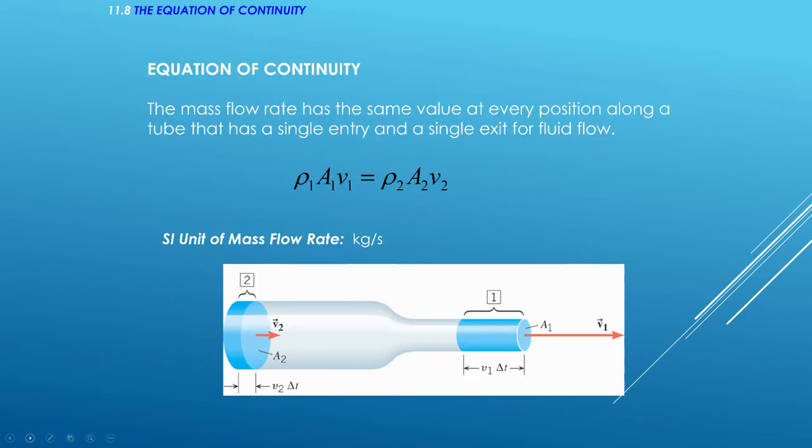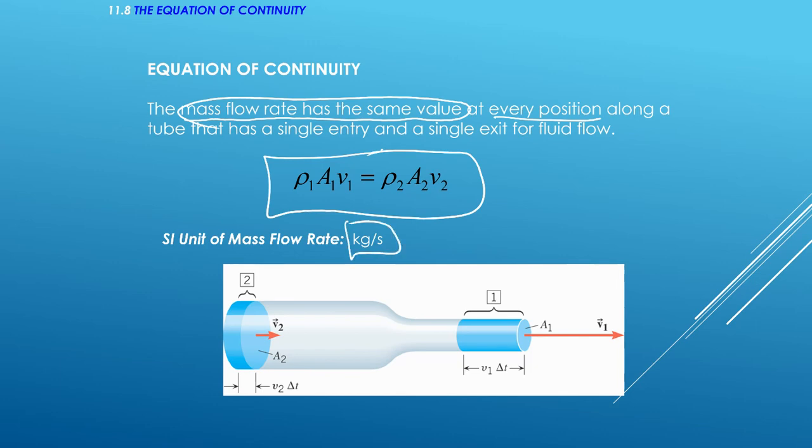The equation of continuity basically says that the mass flow rate is the same value at every position. So in other words, this is going to be a true statement. And mass flow rate, exactly like it sounds, would be kilograms per second. So it's not actually the speed. It's the mass flowing through here.